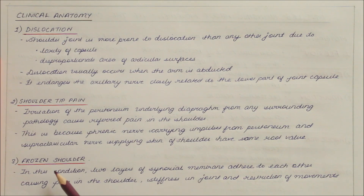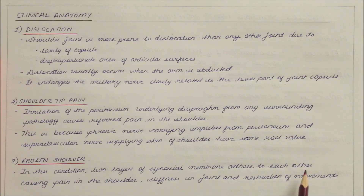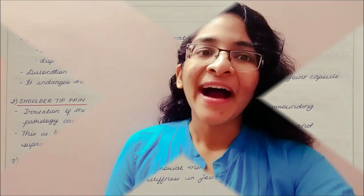Finally, in frozen shoulder, two layers of the synovial membrane adhere to each other, causing pain in the shoulder, stiffness in the joint, and restriction of movements. I hope you found this video helpful. To get updates on my latest videos, click on the subscribe button and tap on the bell icon. Thank you for watching.